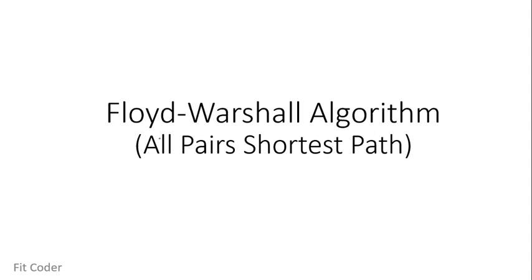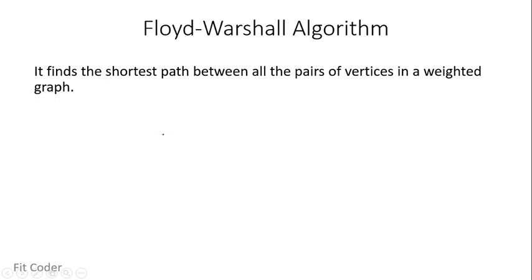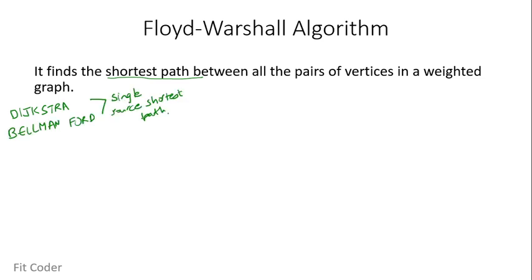In this video, I will be discussing the Floyd-Warshall algorithm. This algorithm is used to find the shortest path between all pairs of vertices in a weighted graph. We have studied a few shortest path algorithms — Dijkstra and Bellman-Ford — which were single-source shortest path algorithms. That means the source remains the same and we find the shortest distance from that source to all other vertices. Floyd-Warshall, however, finds the shortest path between all pairs of vertices in a weighted graph.